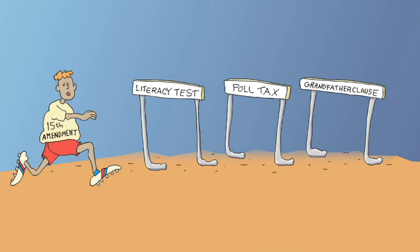But as we know, in the post-Reconstruction decades, that promise really was pretty hollow. Jim Crow and segregation followed, voting rights restrictions followed — literacy test requirements, poll taxes, so-called grandfather clauses, which meant you couldn't vote unless your grandfather was eligible to vote. All of these things really made the promise of the franchise unrealistic to African American men in the South.